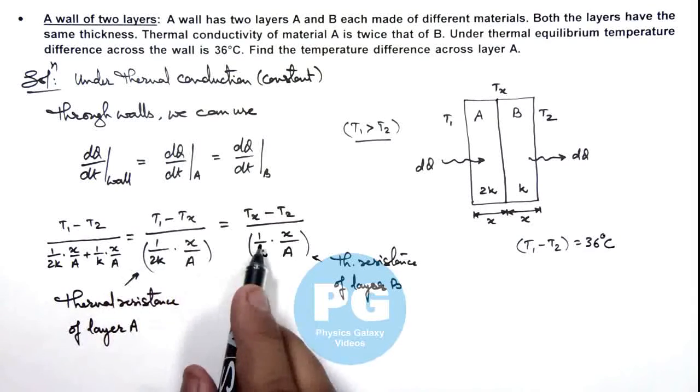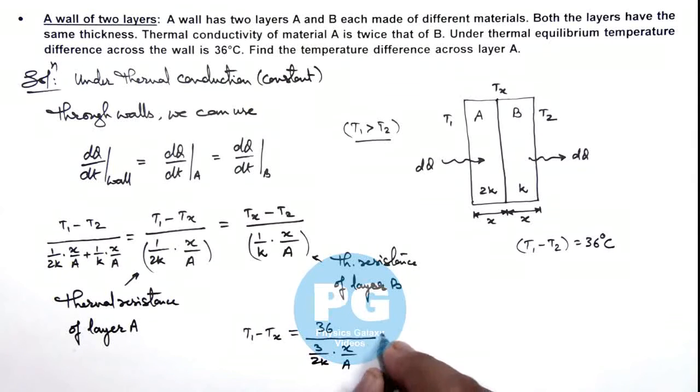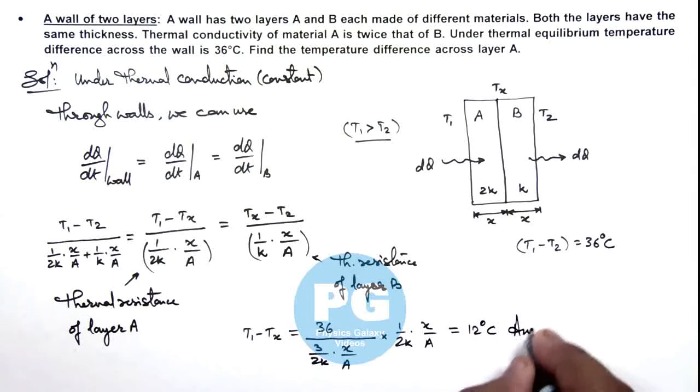If we simplify this, for the first term we can write T1 minus Tx equals 36 divided by the ratio of thermal resistances. On further simplifying, we get the value as 12 degrees Celsius, which is the result of this problem.